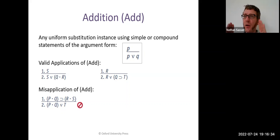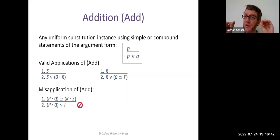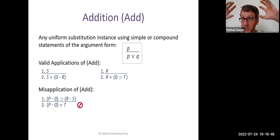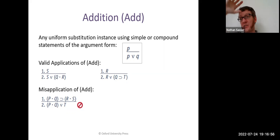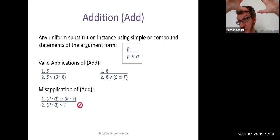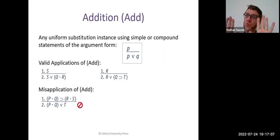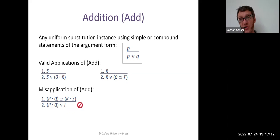Addition is kind of like the opposite of — or pairs with — another rule you already know: disjunctive syllogism. Disjunctive syllogism starts with a premise that's a disjunction and negates one of the disjuncts to give you the other disjunct as a conclusion. It moves from a disjunction to a disjunct. Addition goes in the other direction: it starts with an individual disjunct and concludes to a disjunction. So addition pairs well with disjunctive syllogism, just like simplification pairs with conjunction.